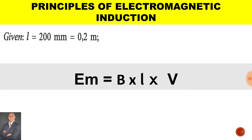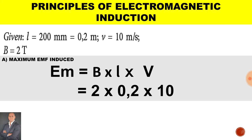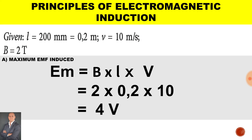If we are given a length of 200 millimeters, which is 0.2 meters, a velocity of 10 meters per second, and a magnetic flux density of 2 Tesla, to calculate the maximum EMF induced: it will be the magnetic flux density of 2 Tesla, multiplied by the length of 0.2 meters, multiplied by the velocity of 10 meters per second, and we end up with a generated EMF of 4 volts.